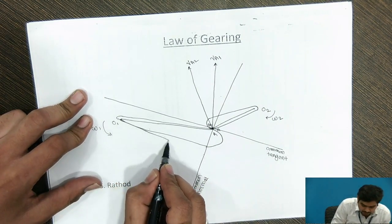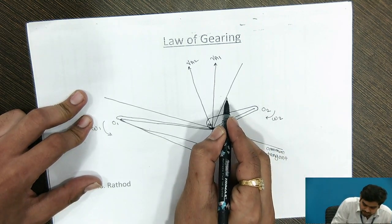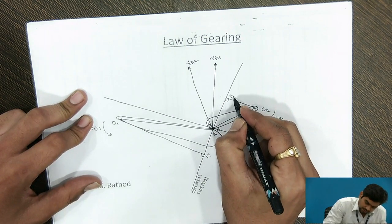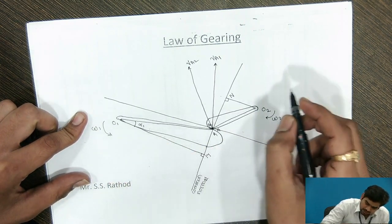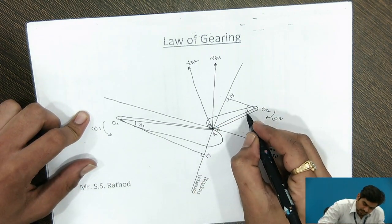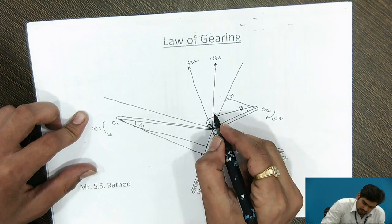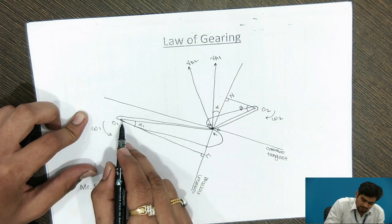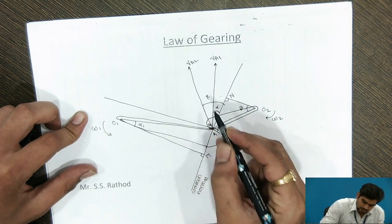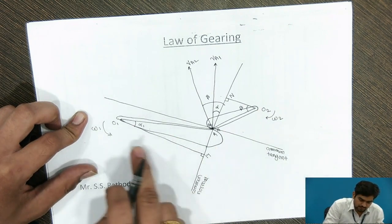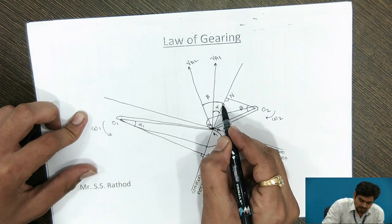Next, draw the perpendicular line to the common normal. We will name this line M and N. The perpendicular line makes an angle alpha with radius O1A1, and the radius makes an angle beta with the perpendicular line. By geometrical consideration, velocity VA1 makes angle alpha and VA2 makes angle beta with the common normal. This is because the common normal is perpendicular to the common tangent, and O1A1 is drawn as a perpendicular line making angle alpha.